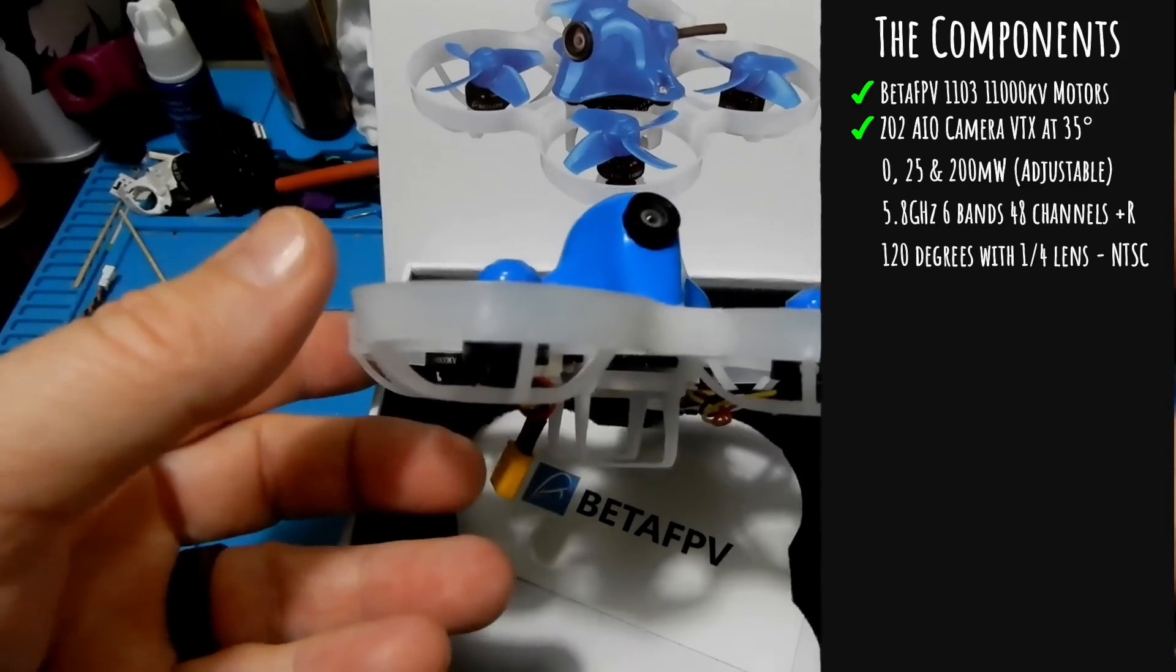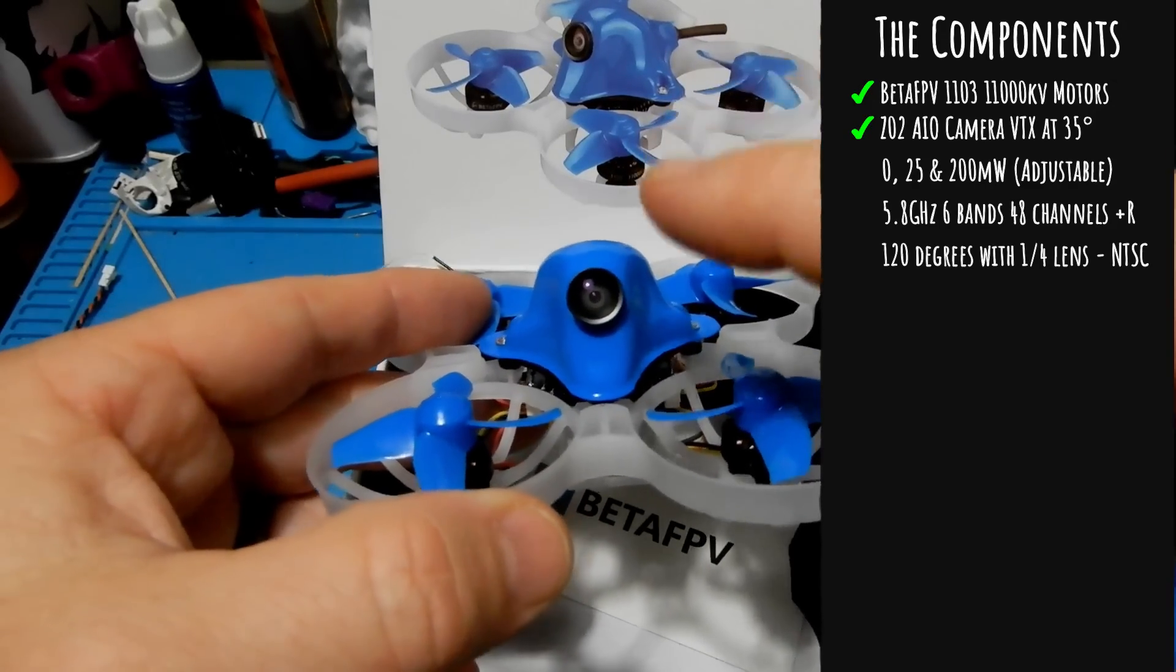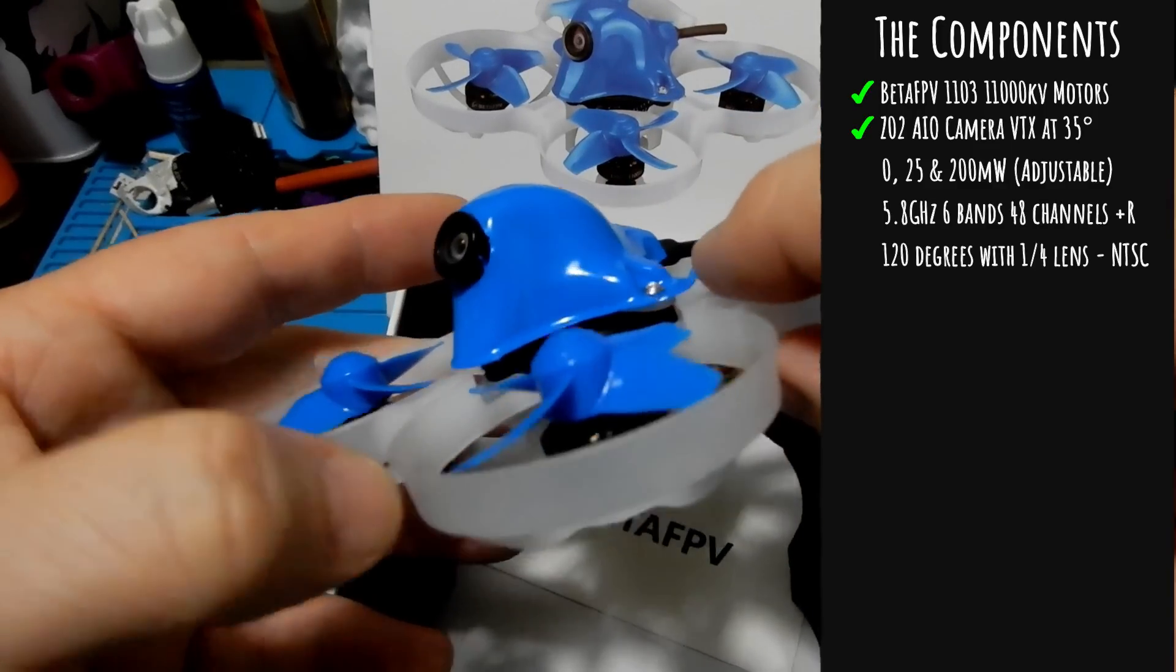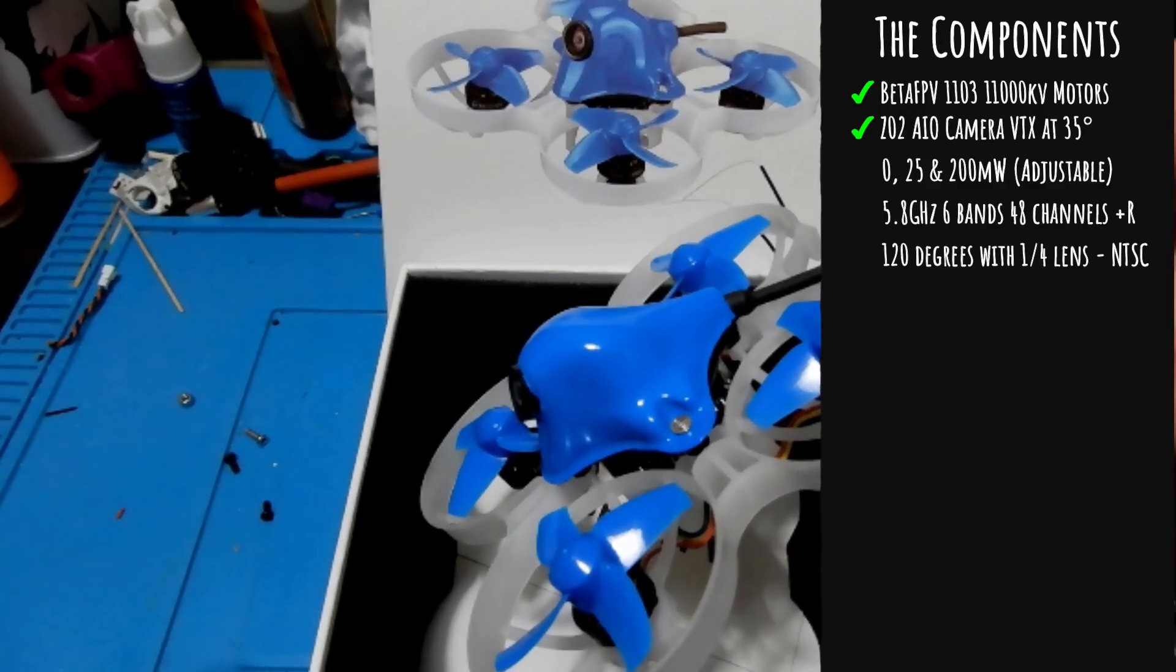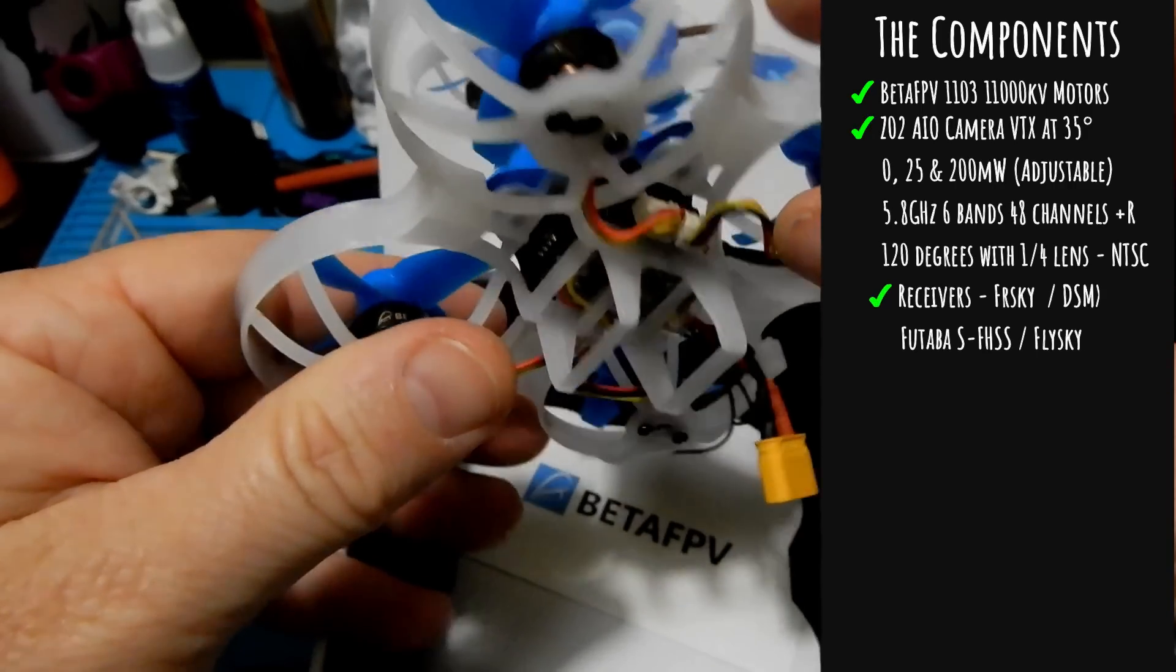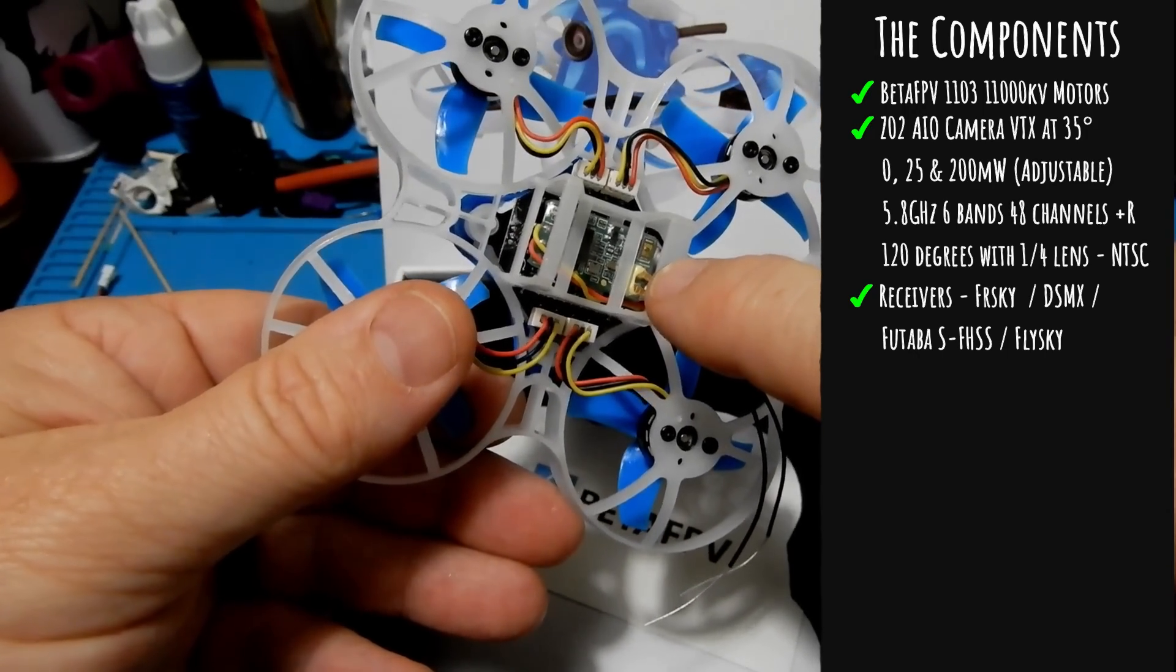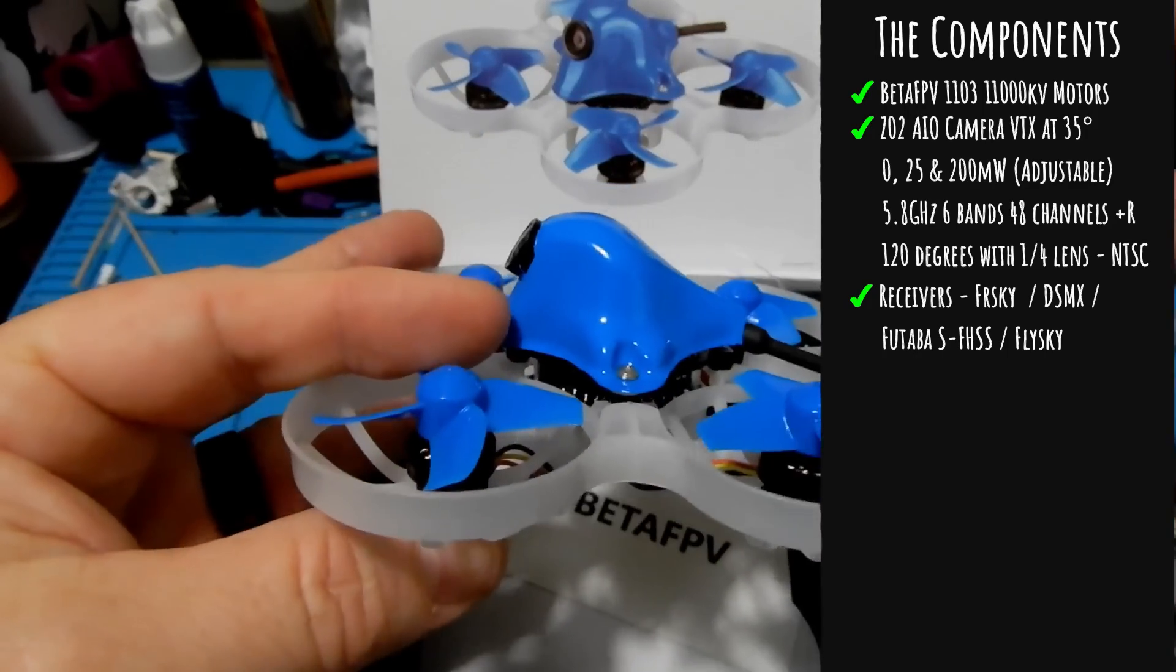Next we have the Z02 all-in-one camera VTX by Beta FPV. It's a 25/200mW switcher, six bands, 48 channels with race band. It has 100 to 120 degree field of view with a 1/4 inch lens running NTSC, and the camera is mounted at a preset 35 degrees. Next up is your receiver, whatever you get - I got an XM Plus but there's also the SMX, Futaba and FlySky as well.